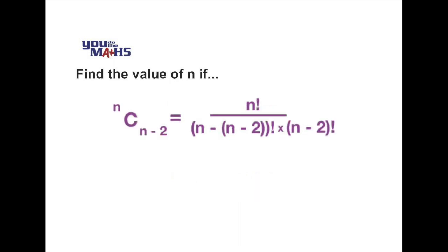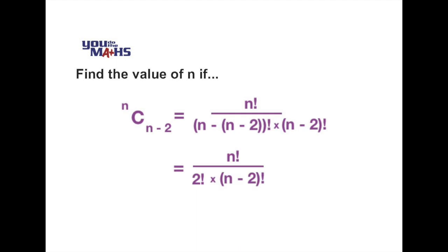So the top line will be n factorial and on the bottom line we have two parts. One of them is the difference between the two values shown in the combination notation, so that's n minus in brackets n minus 2 all factorial, and then the second part of the denominator is n minus 2 factorial. Now of course we can tidy up that first part of the denominator. n minus in brackets n minus 2 can be simplified to just 2 factorial.